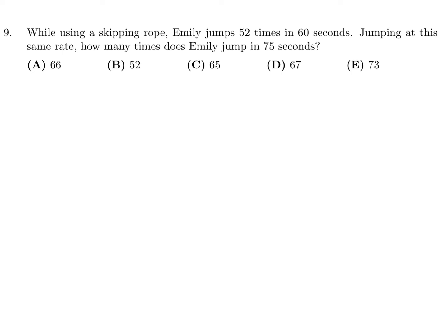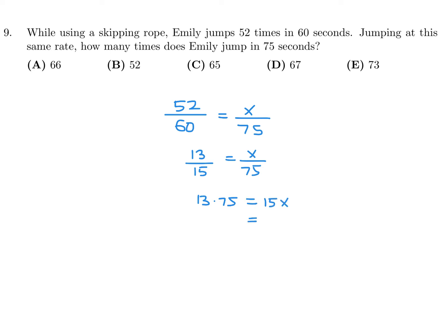Question 9: While using a skipping rope, Emily jumps 52 times in 60 seconds. At the same rate, how many times does Emily jump in 75 seconds? Set it up as a proportion: 52/60 = X/75. Reduce 52/60 to 13/15. Cross multiplying: 13 × 75 = 15X. Divide both sides by 15, and 13 × 5 = X, so X = 65. The answer for number 9 is C.